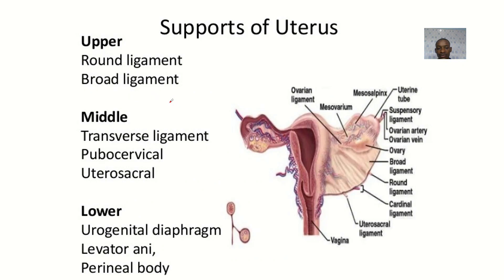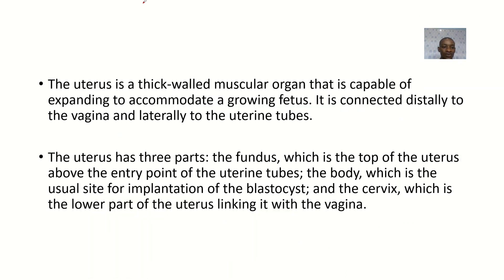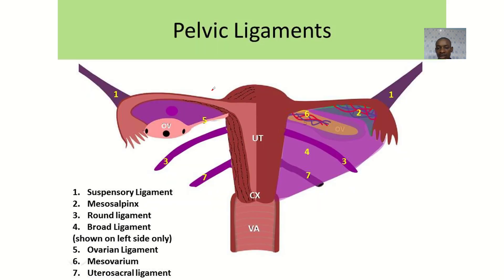Let's introduce the uterus. The uterus is a thick-walled muscular organ that is capable of expanding to accommodate a growing fetus. We are talking about the female reproductive system, and the uterus is the structure that can expand.